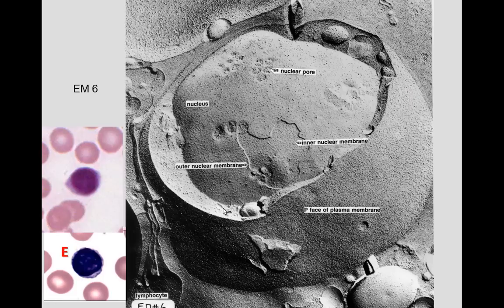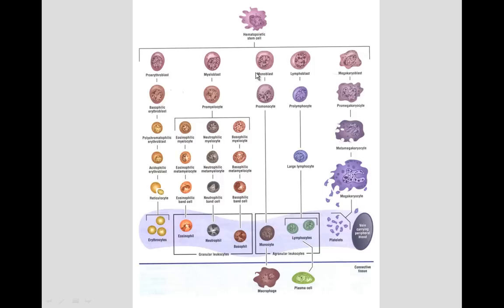Looking at a lymphocyte in carbon replica transmission electron microscopy, we see the lymphocyte with a little rim of cytoplasm, a big mostly spherical nucleus. In the nucleus we can see the nuclear envelope — the outer membrane and the inner membrane — as well as nuclear pores, which are one of the key structures to identify today.